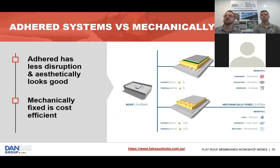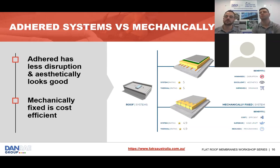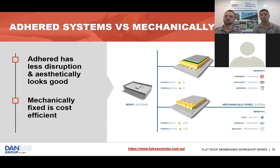This diagram from Fatra shows options for sheet membrane installation: fully adhered using adhesive to bond the insulation and membrane, or mechanically fixed. Each offers advantages and disadvantages. For example, we're looking at a project near a helicopter pad at a hospital where we'd consider a mechanically fixed system due to wind uplift. You need to be mindful of all circumstances — programming, noise, and structural factors — before arriving at a proper solution.